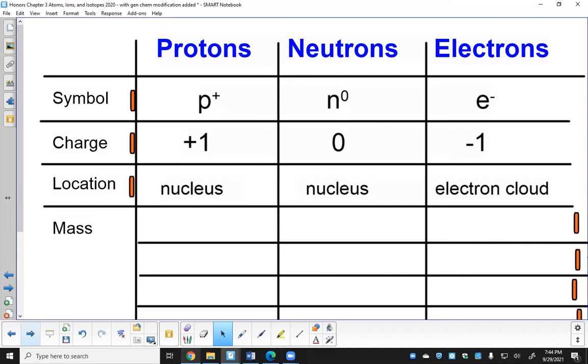But the electrons are in the outer fringes of the atom in the electron cloud. Most of the space of the atom is actually the electron cloud, and they occupy that region of space.